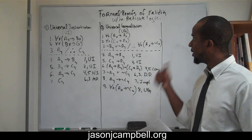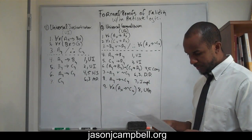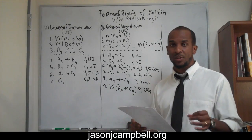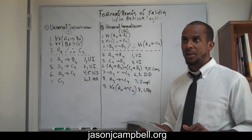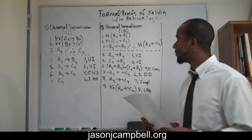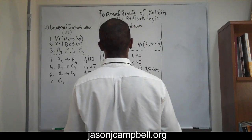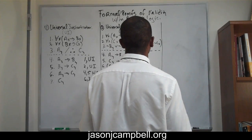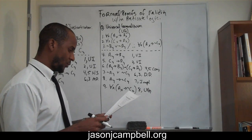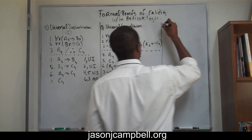So we've done universal instantiation, we've done universal generalization. The next is existential generalization, and I'm going to talk about that now. Number three is existential generalization.